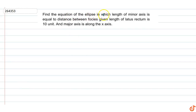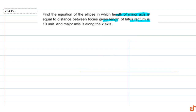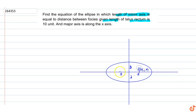In this question, find the equation of the ellipse in which the length of the minor axis is equal to the distance between the foci. Given length of the latus rectum is 10, and the major axis is along the x-axis. Let's suppose this is our ellipse — the length of the minor axis is 2b, semi-minor axis is b, semi-major axis is a, and the foci are at (ae, 0) and (−ae, 0).